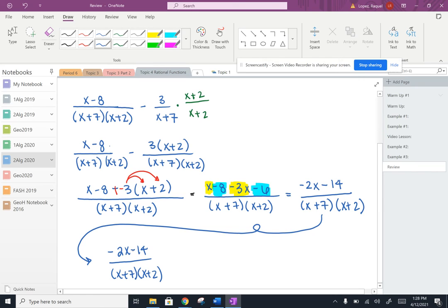We're going to divide the numerator, both terms of the numerator, by negative 2. So when I factor that out, I end up with negative 2 times x plus 7, all over x plus 7 times x plus 2.